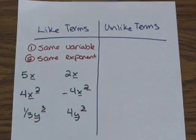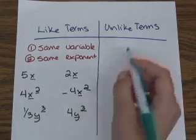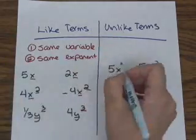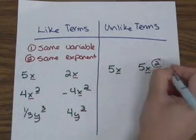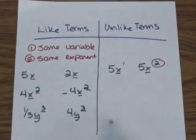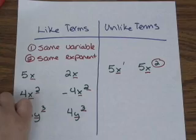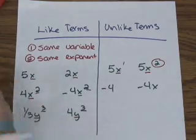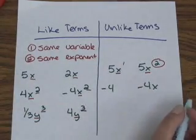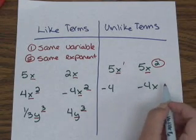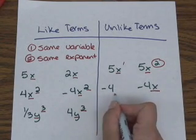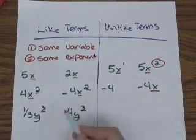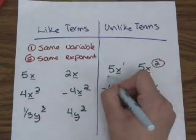Some examples of unlike terms would include 5x and 5x squared. Although they both have the variable x, one has the exponent of 2 and one only has the exponent of 1, so they're not alike. Another example would be negative 4 and negative 4x. They don't have the same variable — this one has x and this term has no variable — so these are definitely not like terms and cannot be combined.